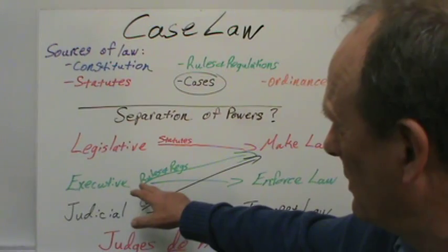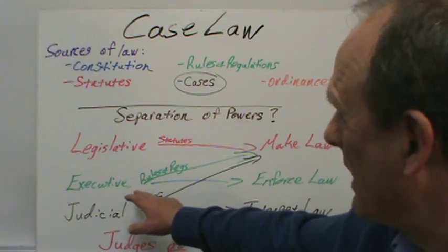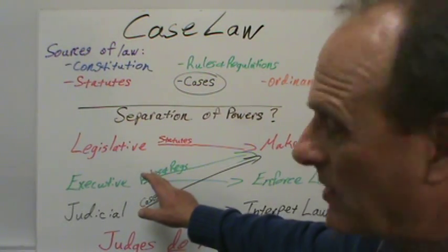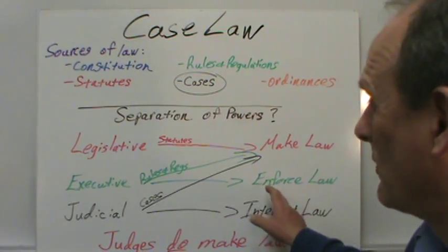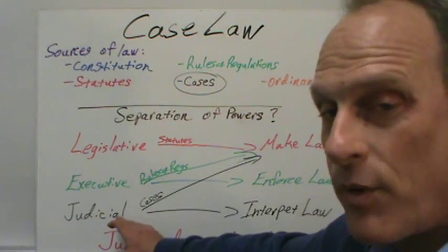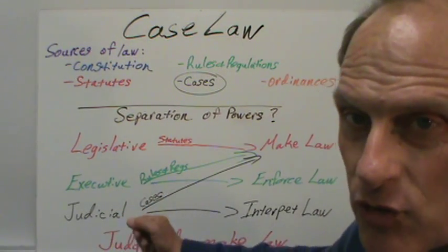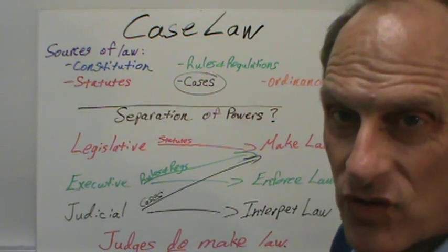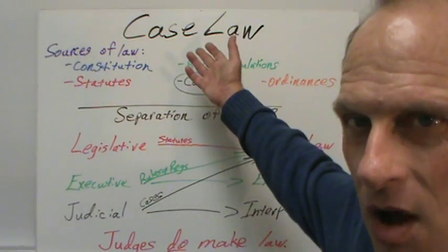The executive branch — the governor, the president, the bureaucracy — they make rules and regulations that are law, so they just don't enforce the law, they actually make law. And then the judicial branch, the law that is generated by the judicial branch comes out of the cases that the courts hear, and so we call that case law.